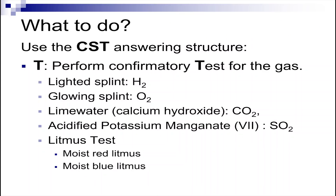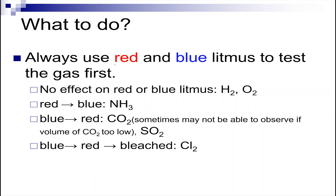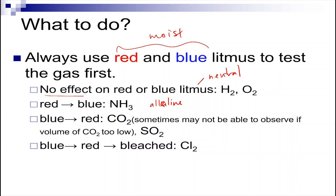You are required to perform a confirmatory test for the gas. But before you perform any confirmatory test, you should start off with the litmus test. You will always use red or blue litmus paper to test for the gas first, and this must be moist. If there is no effect on the litmus paper, it's usually because the gas is neutral. If it turns blue, the gas is alkaline. If it turns red, the gas is acidic. And if it turns red and bleached, the gas is both acidic and has bleaching properties.